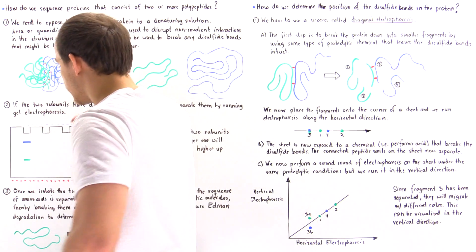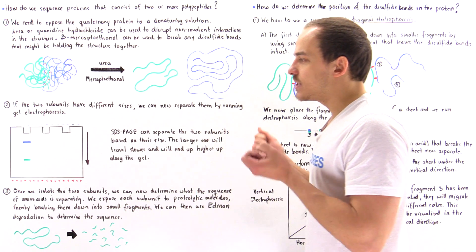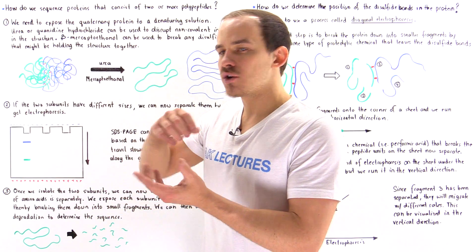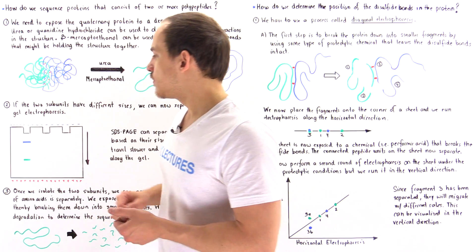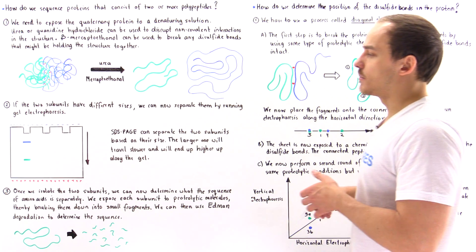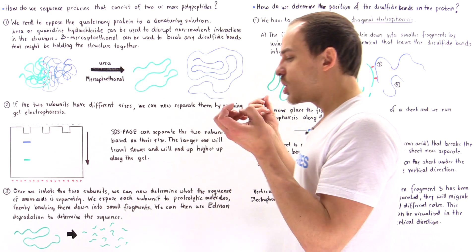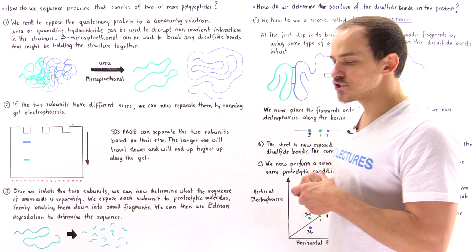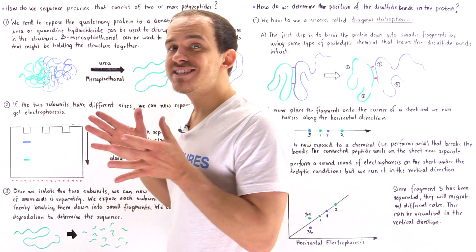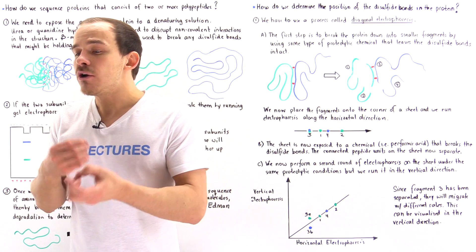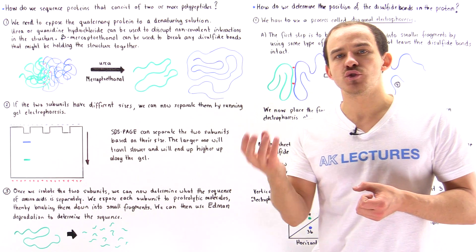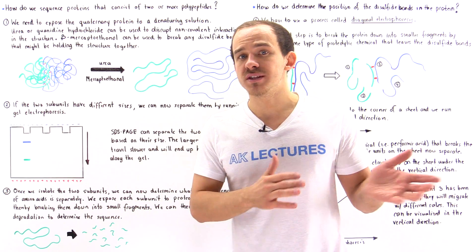Once we form these two bands, we can now isolate the two proteins. We take out the green protein and place it into beaker one. We take out the second polypeptide chain and place it into beaker number two. Now we have two beakers with these two different polypeptide chains. In step three, all we have to do is follow the same exact procedures that we followed with individual polypeptide chains, as we discussed previously.